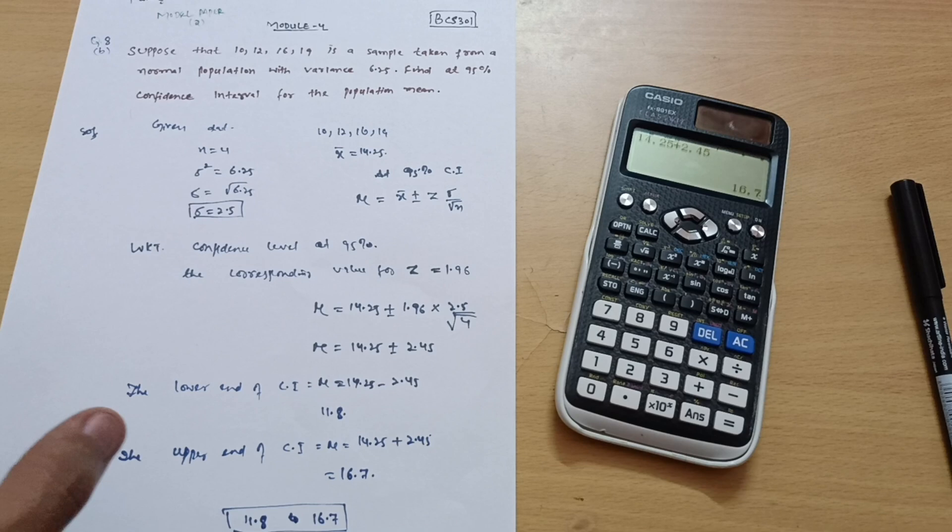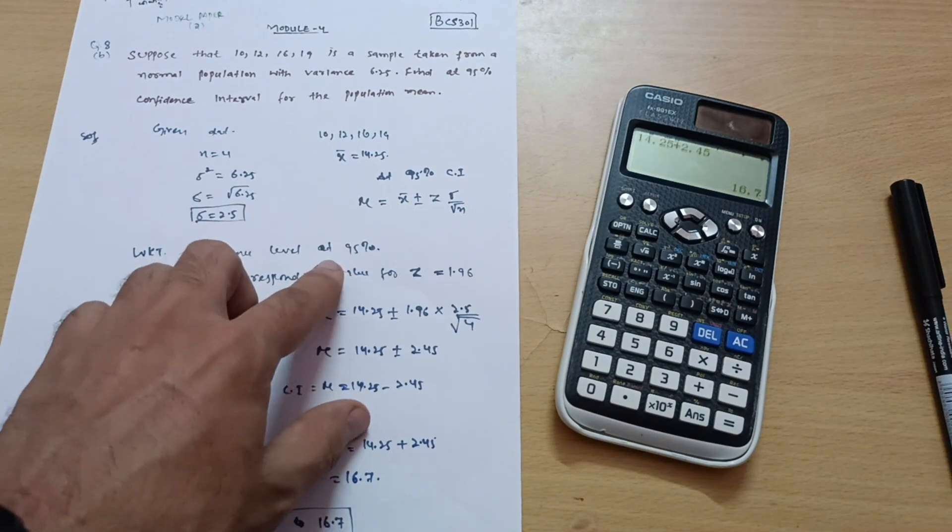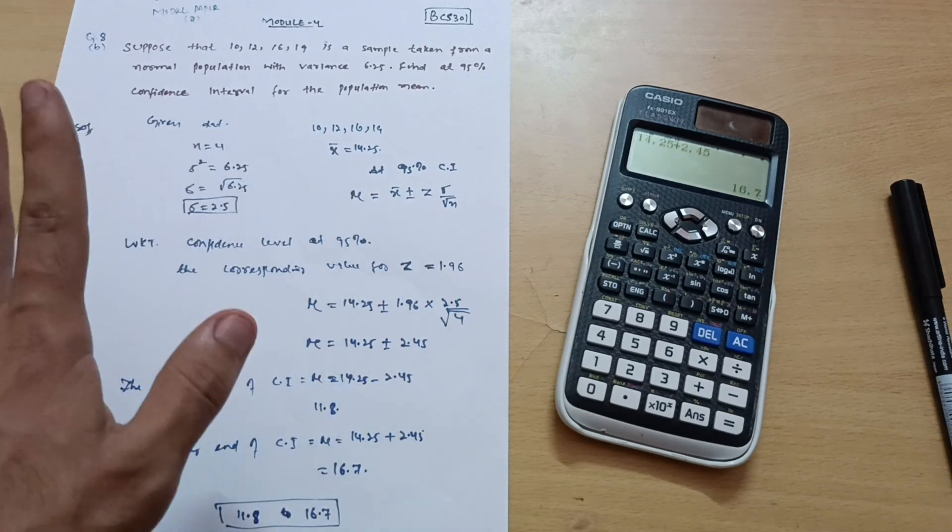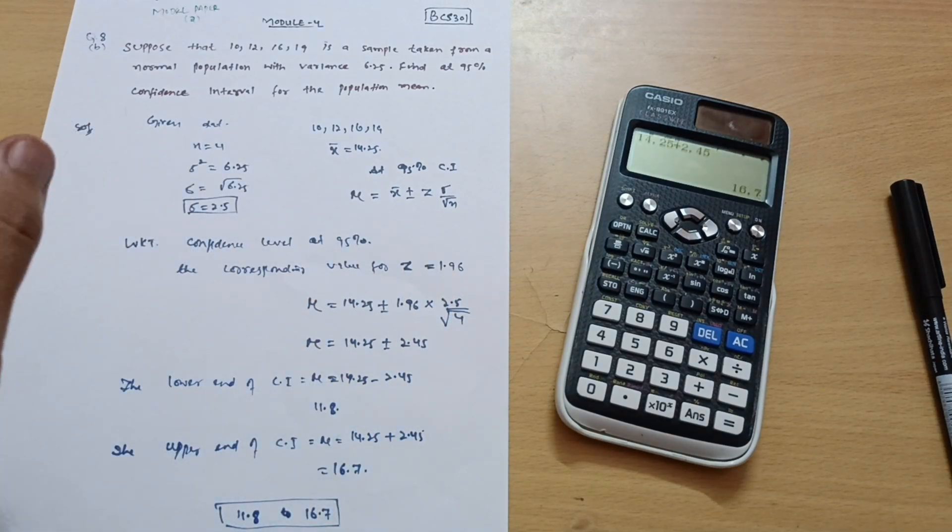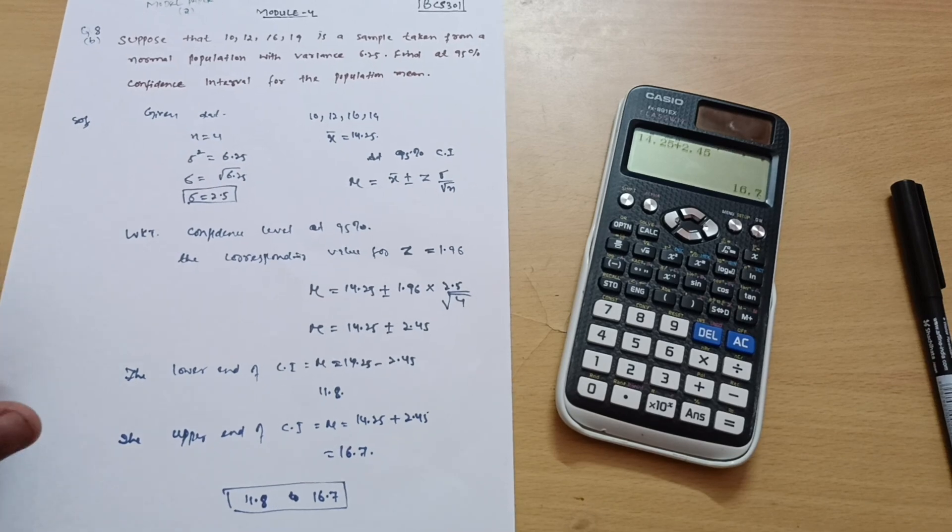I hope this is clear to you people. Only thing is you should remember the formula, and for the confidence interval of 95%, the corresponding value z is equal to 1.96. Nothing more than that. These are very simple problems. You can easily get 20 marks from this particular module. So I wish you all the best for your examination. Thank you.